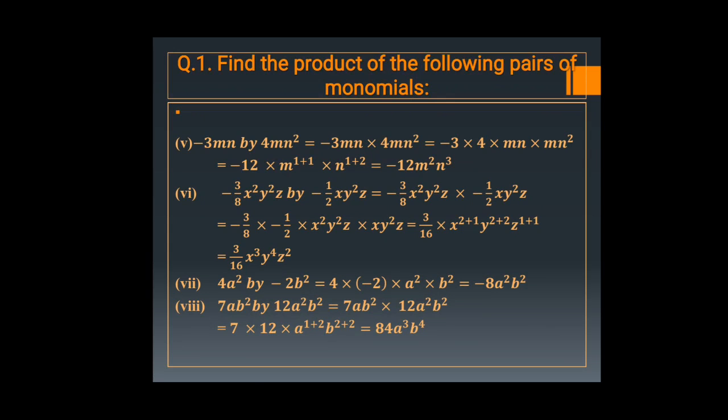Continuing: 4 into minus 2 gives minus 8, and a square into b square equals a square b square. So the product is minus 8 a square b square.